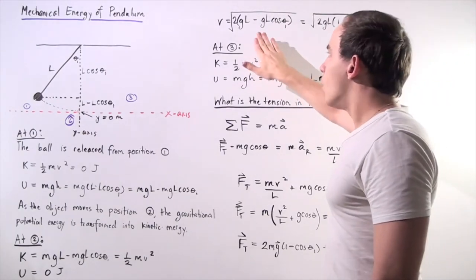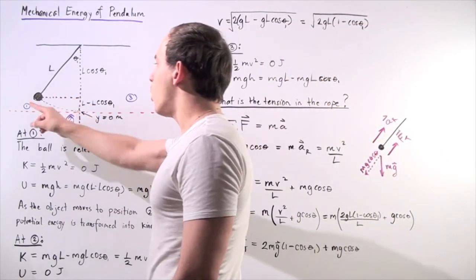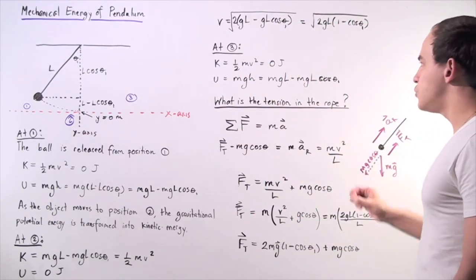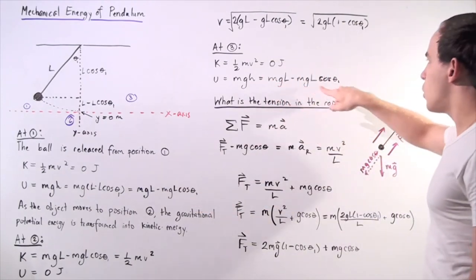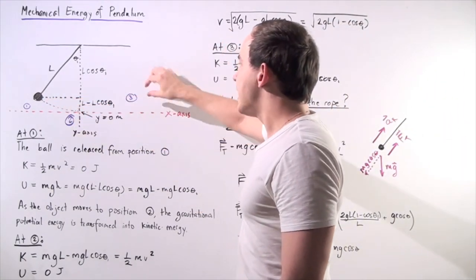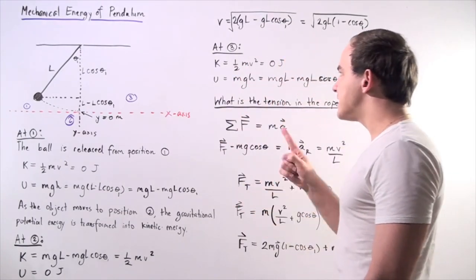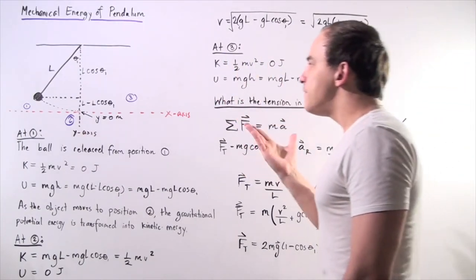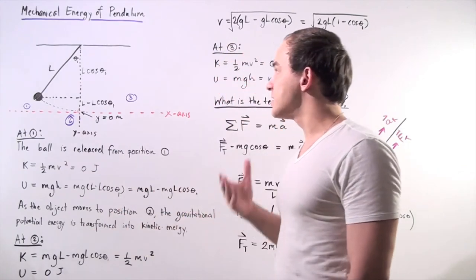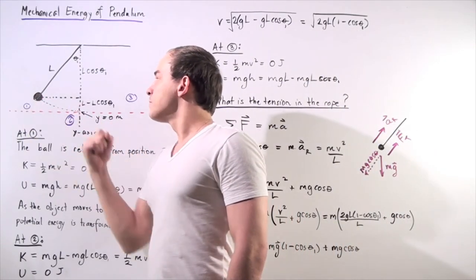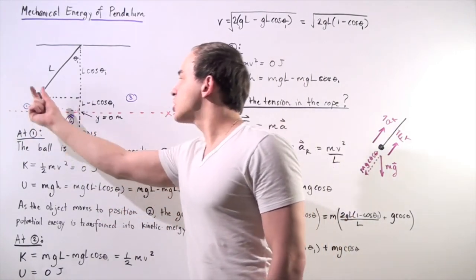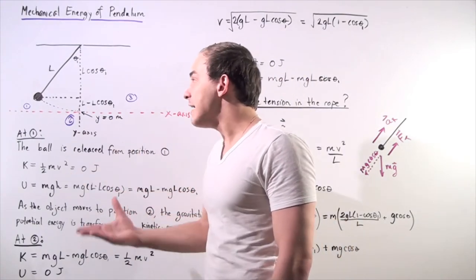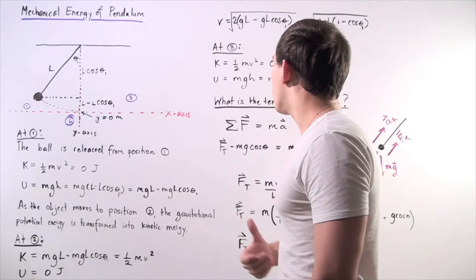At position three, the situation is identical to position one: the object has maximum gravitational potential energy equal to mgl minus mgl cosine theta one, and because it is momentarily stationary, its kinetic energy is zero. As long as we neglect drag and friction, the object will continue to swing endlessly. In real life, the pendulum stops because of drag forces and friction.